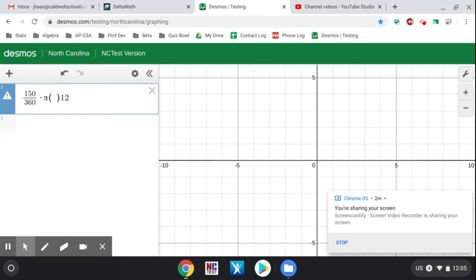So 12 squared. If you want to type in 12 squared, that's fine. If you want to type in the simplified version, 144, that's fine. Either way, I get 188.495.